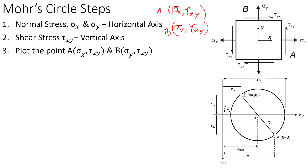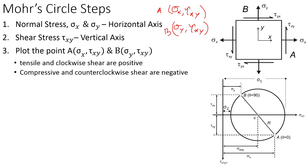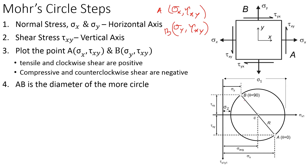There are sign conventions to follow: tensile stress is positive, compressive stress is negative. Counterclockwise shear stress is negative — which is unusual compared to moment conventions — and clockwise shear stress is considered positive in Mohr's Circle. These are standard conventions, so do not change these signs.